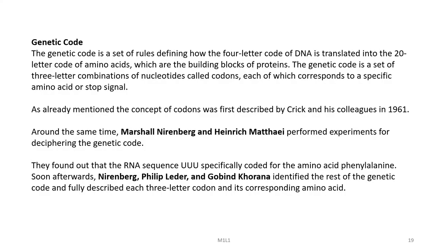What is the genetic code? The genetic code is a set of rules defining how the four-letter code of DNA is translated into the twenty-letter code of amino acids, which are the building blocks of proteins. The genetic code is a set of three-letter combinations of nucleotides called codons, each of which corresponds to a specific amino acid or a stop signal. The concept of codons was first discovered by Crick and his colleagues in 1961.